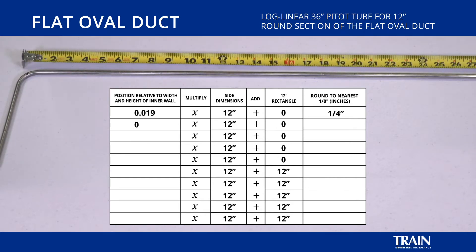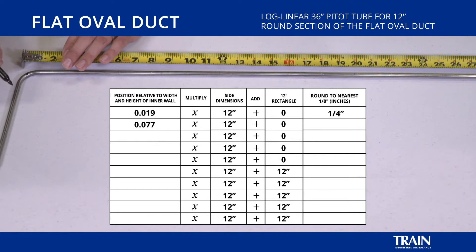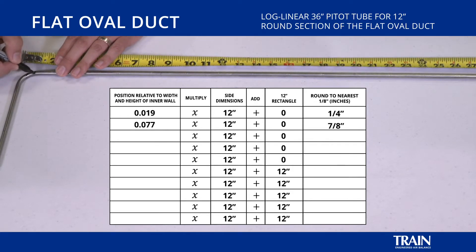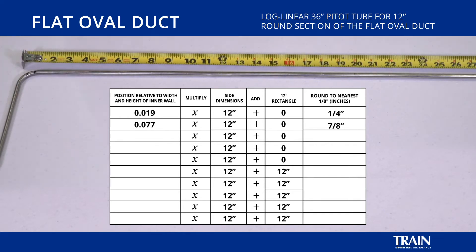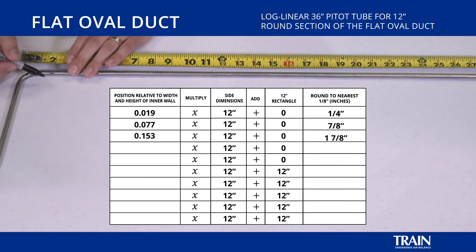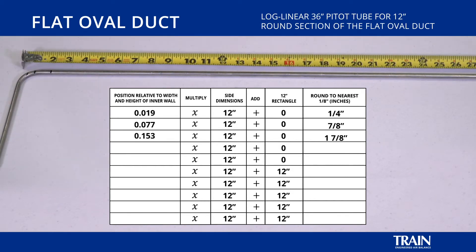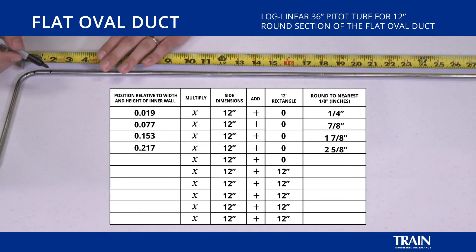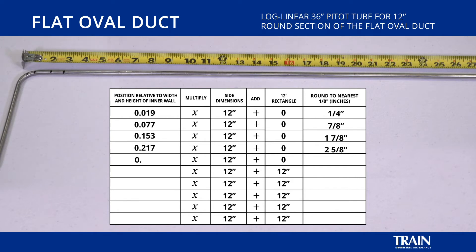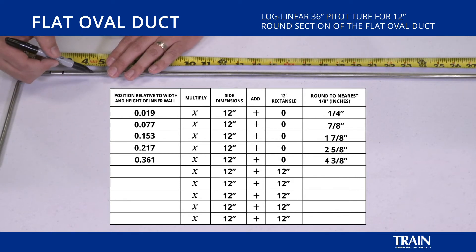The second factor, 0.077, results in seven eighths on our pitot tube. The third factor, 0.153, results in one and seven eighths on our pitot tube. The fourth factor, 0.217, results in two and five eighths on the pitot tube. The fifth factor, 0.361, results in four and three eighths on the pitot tube.